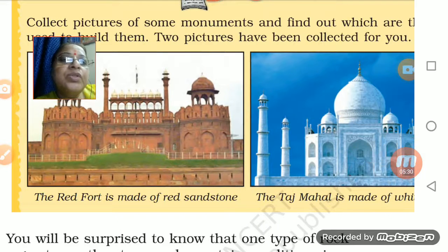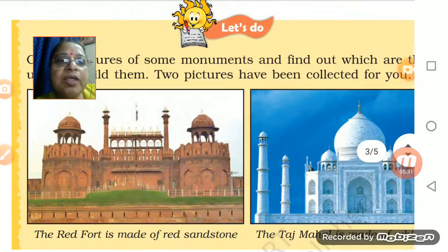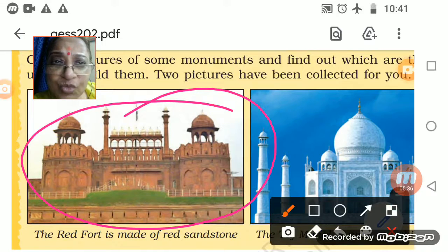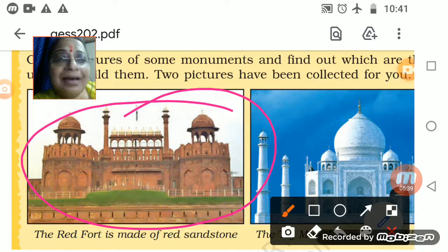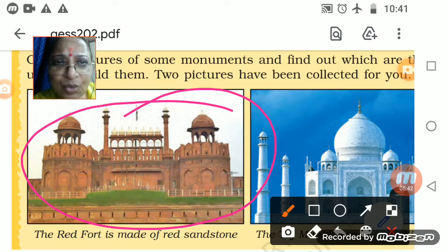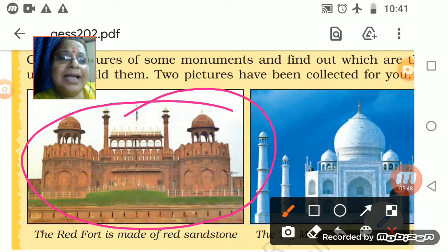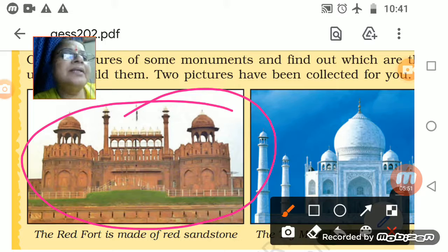The Taj Mahal and the Red Fort — these are made from red sandstone, which is a sedimentary rock. Using sandstone, this big fort has been made and it is called the Red Fort.